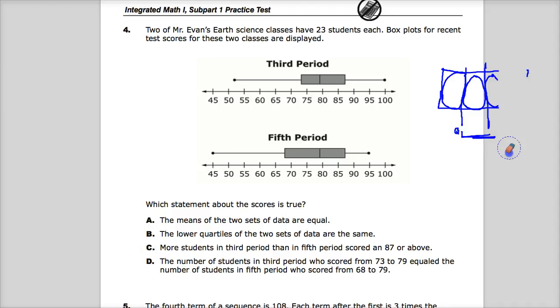Now, what are we working with? Two of Mr. Evans' earth science classes have 23 students each. Box plots for recent test scores for these two classes are displayed. So here we go. This would be where Q3 starts, Q1 ends here. So this is the interquartile range. And you'll see the median value tends to fall right here.